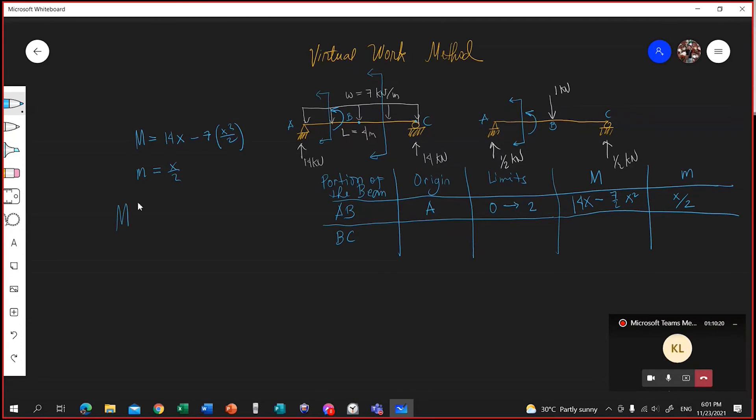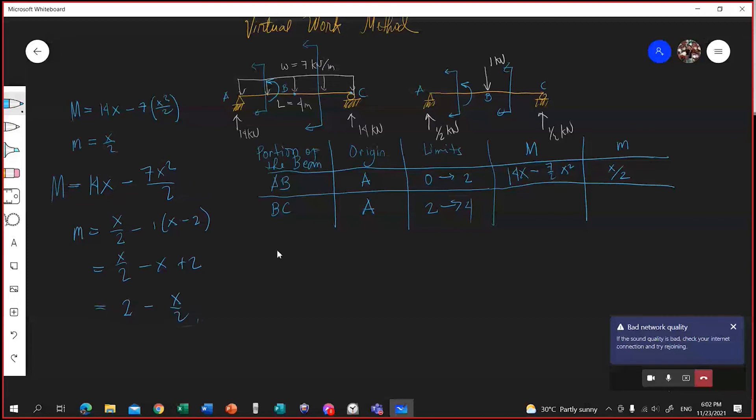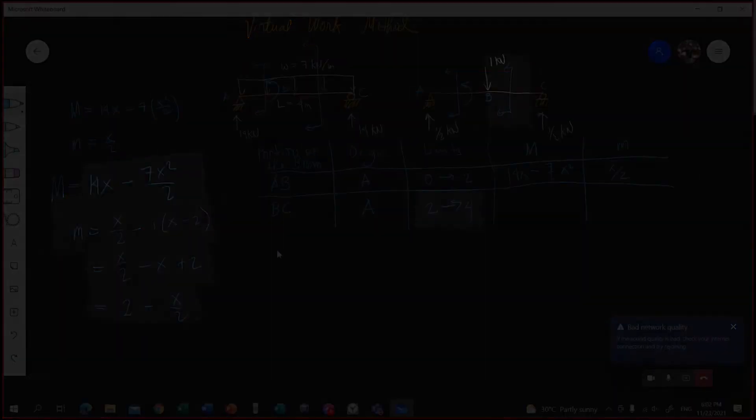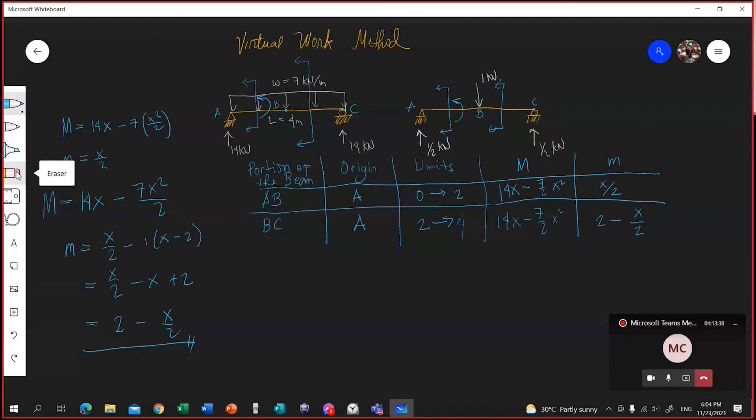Your capital letter M should always include everything to the left of this cutting plane. Your moment is 14x minus 7 over 2 x-squared. But your limit is from 2 to 4. Now your small letter m here, at the cutting plane, will be x over 2 minus 1 times x minus 2. So this will be x over 2 minus x plus 2. Simplifying this further will be 2 minus x over 2. That's your small letter m.